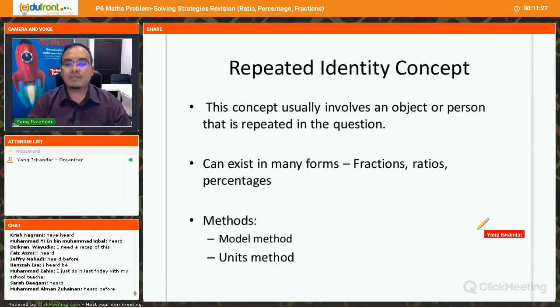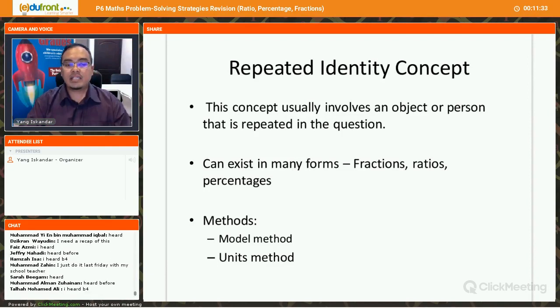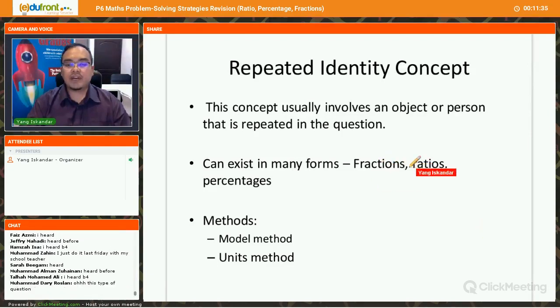So repeated identity strategy. This concept usually involves an object or person that is repeated in the question. It can exist in many forms under the topic of fractions, ratio, or percentage. So we can use two basic methods: number one is the model method and the other one is the units method.